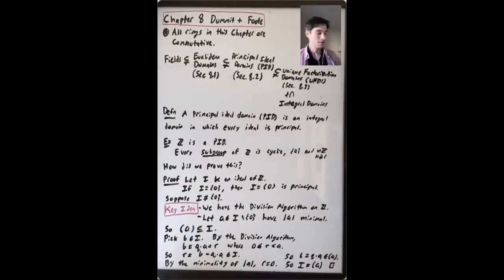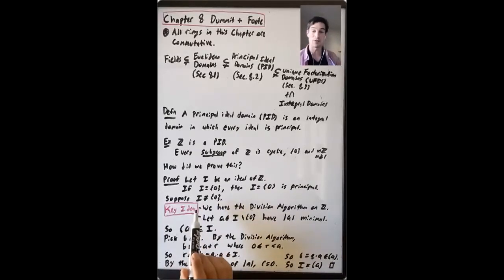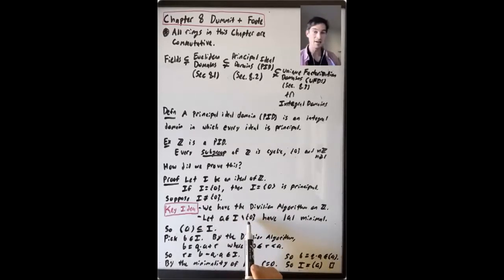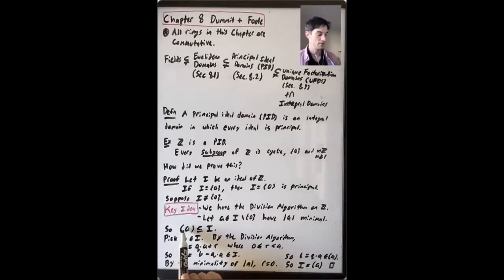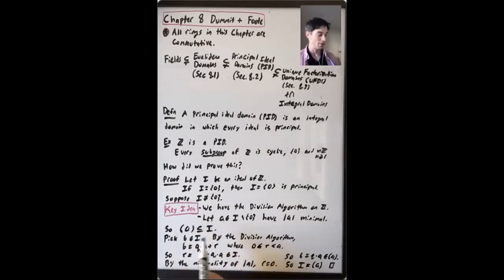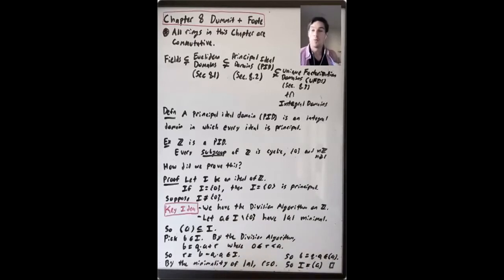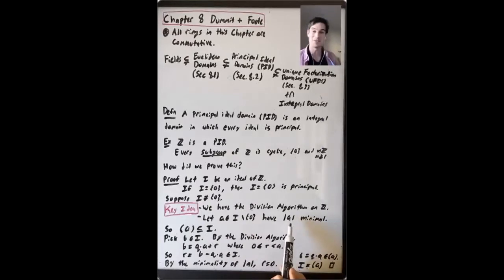The idea to show that I is principal is to find a generator for it. We choose A to be a non-zero element of I for which the absolute value of A is minimal. The ideal generated by A is certainly contained in I. So what we're going to do is show inclusion the other way — that in fact I equals the ideal generated by A, and therefore I is principal, where the generator is any element that is non-zero and has minimal absolute value.